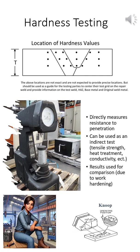In welding, hardness tests help assess the properties of the weld metal. By carefully analyzing a welded joint, we can identify hard zones and determine how welding heat has affected the base metal's properties.